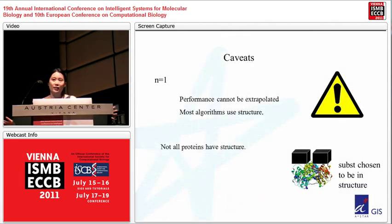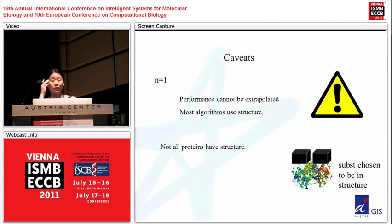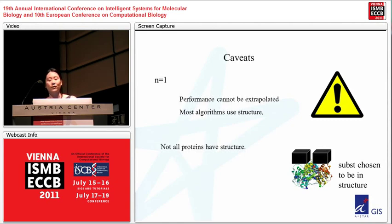The caveat here is that CBS is one protein — N equals one. The performance values probably can't be extrapolated on a genome-wide level because it's only one protein. Most algorithms did use the structure, which we may not have for most proteins in the human genome. Also, the substitutions were picked to be preferentially in the structure, so it's not known what performance would be if we did not have structure.